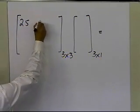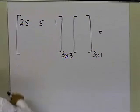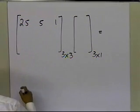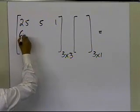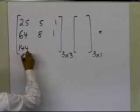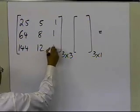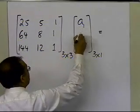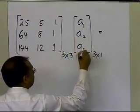Now I'm going to put 25 here, 5 here, 1 here, that's why I intentionally put down the coefficients in the previous matrix. I get 64, 8, and 1 here, and I get 144 here, 12 here, and 1 here. And here I get A1, here I get A2, here I get A3,